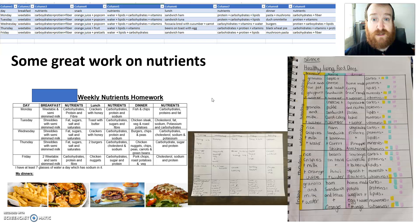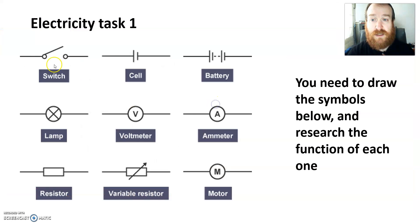Now you've got two tasks. The first task is to look at these different symbols. We've got a switch, a cell, a battery, a lamp, a voltmeter, an ammeter, a resistor, a variable resistor, and a motor. You need to draw these symbols and write down a description of what they do.